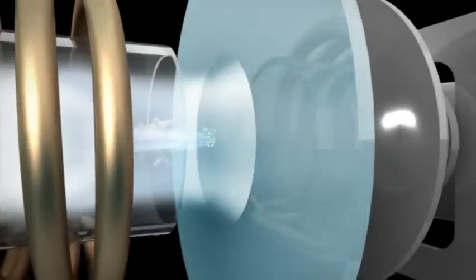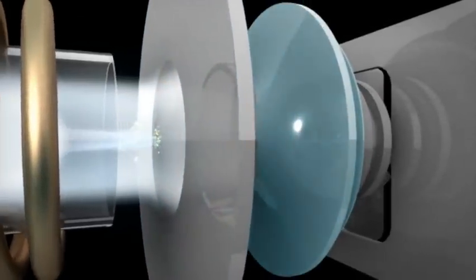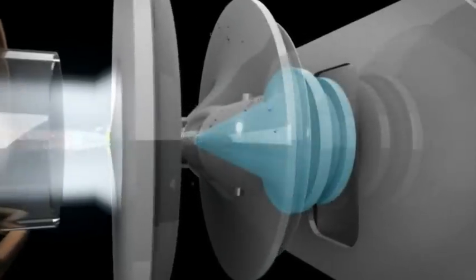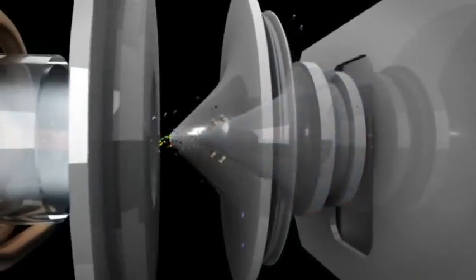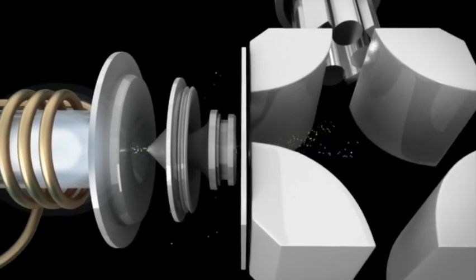Positively charged ions are then drawn through a sampler cone, a skimmer cone, and a unique hyper-skimmer cone that remove unionized material more effectively than typical two-cone instruments.